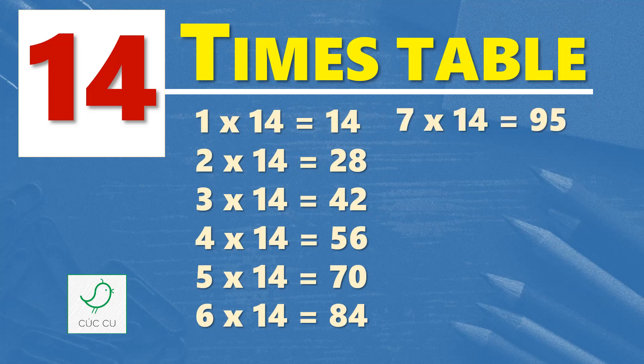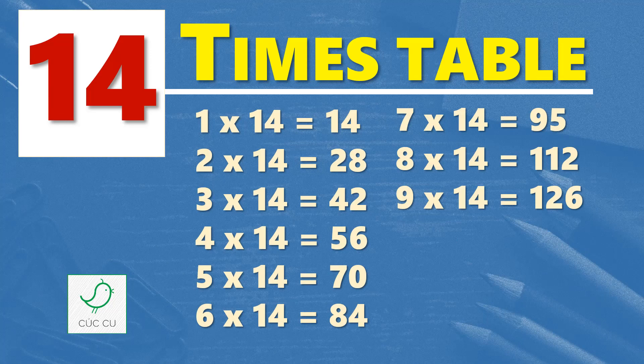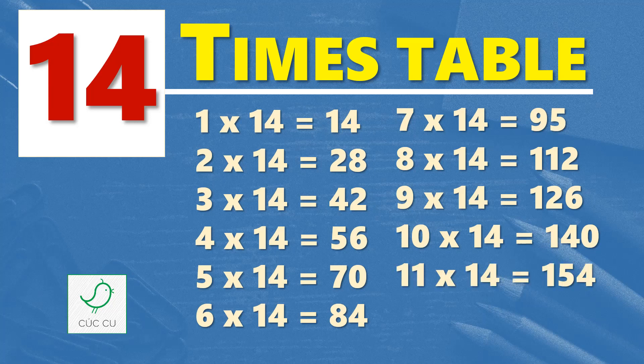Seven times fourteen are ninety-eight, eight times fourteen are one hundred and twelve, nine times fourteen are one hundred and twenty-six, ten times fourteen are one hundred and forty, eleven times fourteen are one hundred and fifty-four, twelve times fourteen are one hundred and sixty-eight.